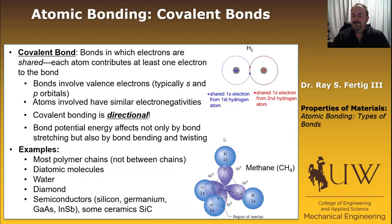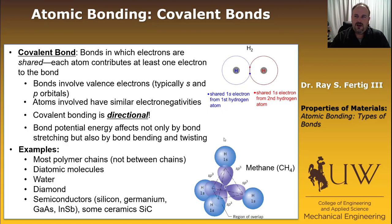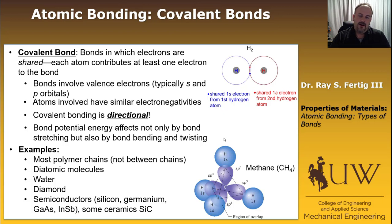Where do we see covalent bonds? Most polymer chains are bonded together via covalent bonds — not between the chains, but the long chain backbone itself is connected by covalent bonds. Diatomic molecules like hydrogen, water, diamond, and many semiconductors — silicon, germanium, gallium arsenide, indium antimonide — are covalently bonded. Some ceramics like silicon carbide also have covalent bonding. Ceramics can be either covalently or ionically bonded.